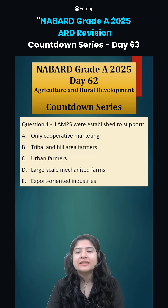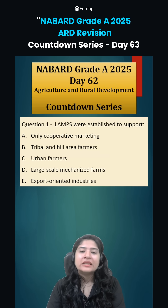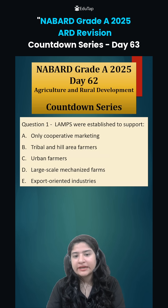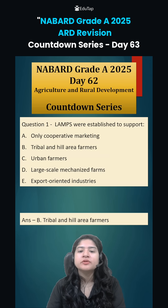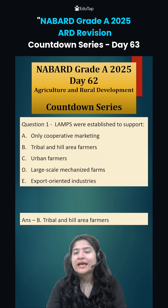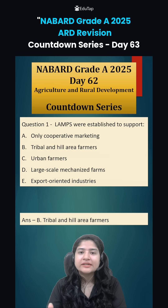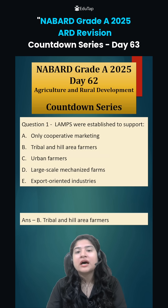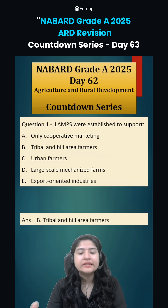Question number one: LAMPS was established to support what? LAMPS stands for Large Size Adivasi Multipurpose Society, and it was established to support tribal and hill area farmers. This multipurpose society was set up so that credit and marketing facilities could be provided to the Adivasis of the hilly regions.